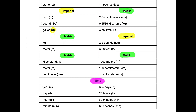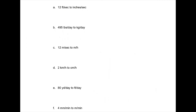For time conversions: 1 year is 365 days, 1 day is 24 hours, 1 hour is 60 minutes, 1 minute is 60 seconds. A common one is going from hours to seconds — 1 hour equals 3,600 seconds, which is just 60 times 60.